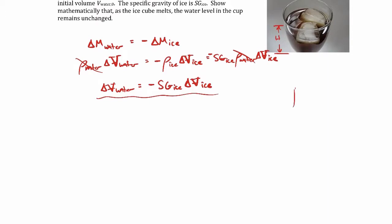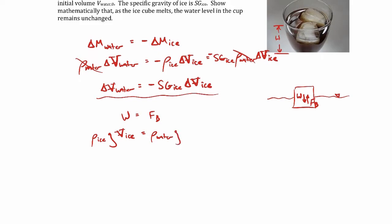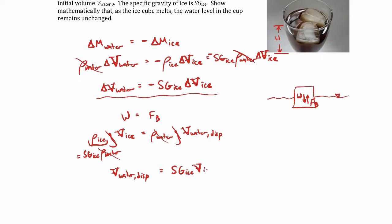Now let's do a force balance. We have some ice cube floating in the water — the weight of the ice cube pushing down is supported by a buoyant force acting upwards. We equate the weight of the ice to the buoyant force: the density of ice times gravity times the volume of the ice cube equals the density of water times gravity times the volume of water displaced. Writing the density of ice as the specific gravity of ice times the density of water, we can divide through by the density of water and gravity, giving us: volume of water displaced equals the specific gravity of the ice times the volume of the ice. This comes from the force balance.